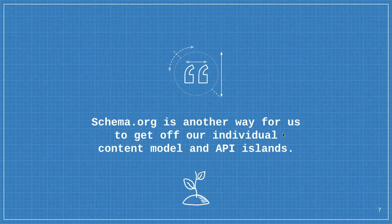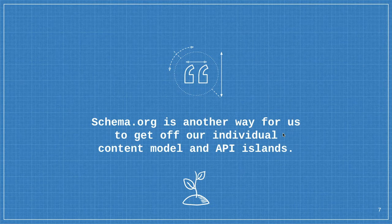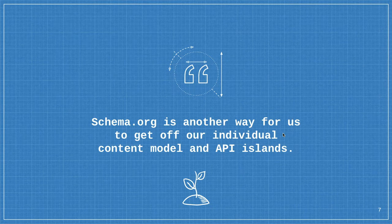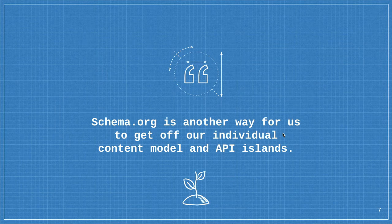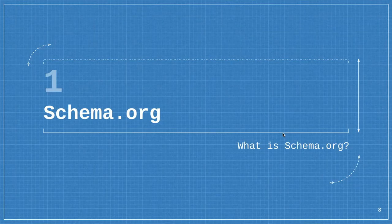Something I feel strongly about: this module provides another way to get off our individual content model and API silos. We each build our own website with our own data structure, and when you need to integrate with another website you have to call their API and figure out what they did — define a blog post, define people, define an event. What are they calling it — date start, date end, field underscore start, date start capital date? It's a mess.